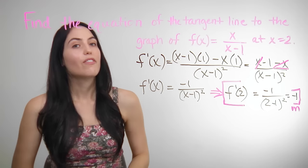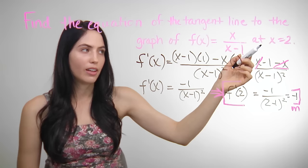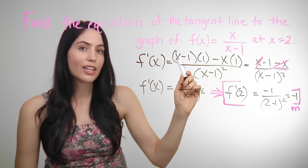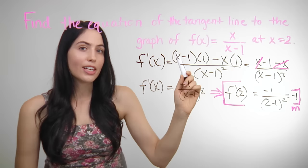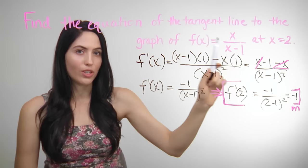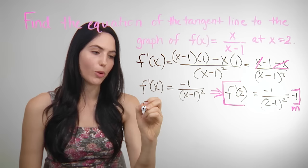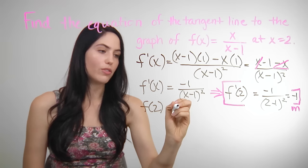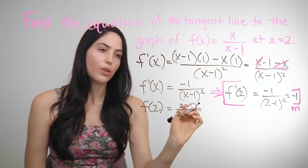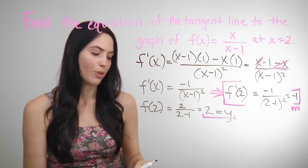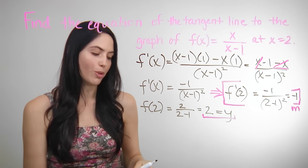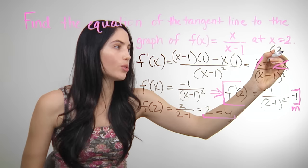Third step: find the original y value if you weren't given it. You were only given the x coordinate, so you have to find y. All you need to do is take the original x, plug it into your original equation f, and find the y value. So f of 2 means you're plugging in 2 for x: you have 2 over 2 minus 1, which is 2 over 1, which is 2. So if you had to write a full point, it would be 2 comma 2.